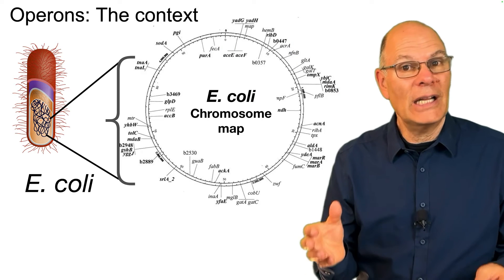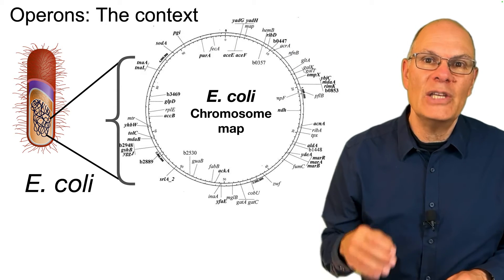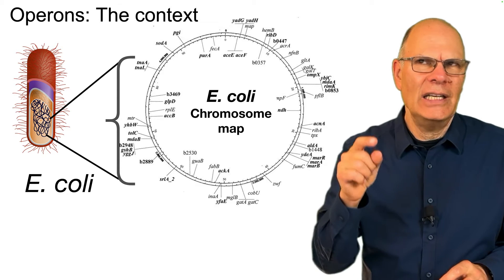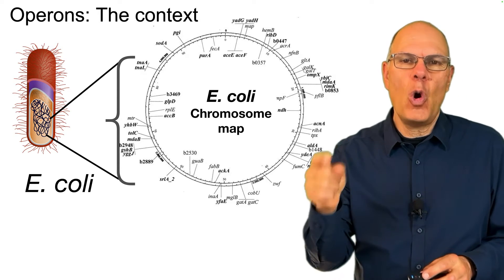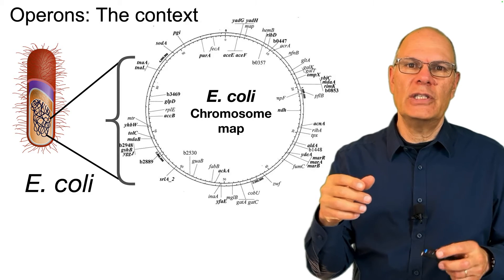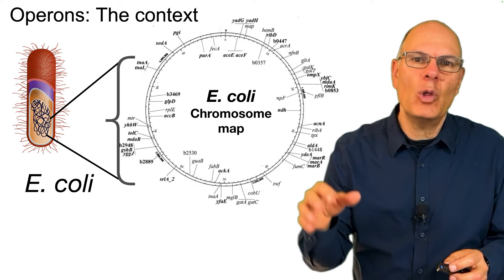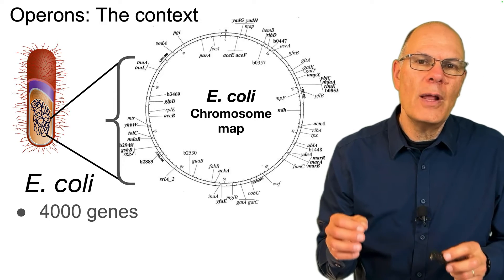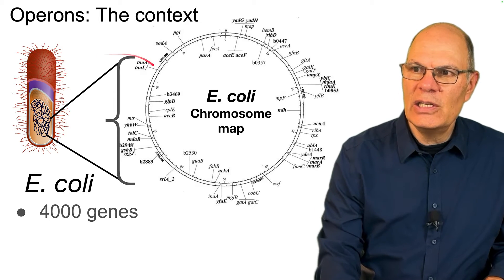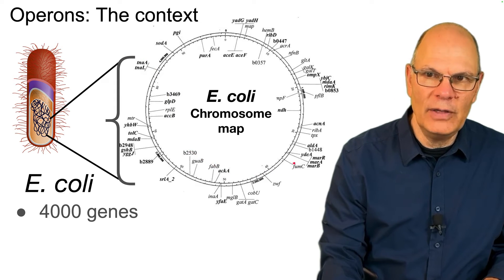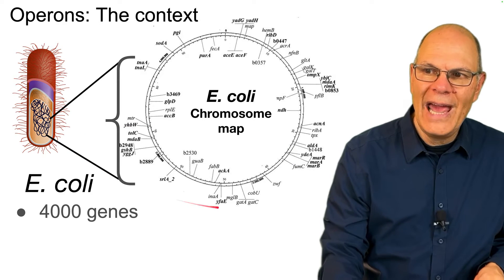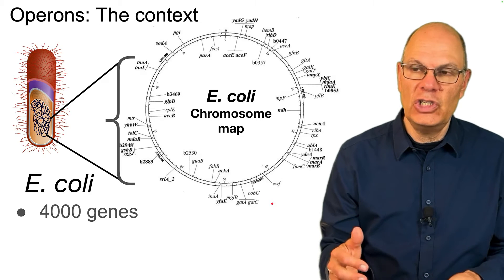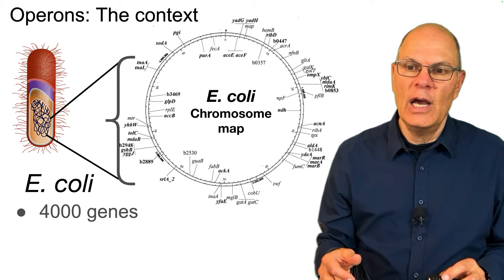Let's start with a little context. E. coli is a bacterial cell that lives in our colons — that 'coli' is related to 'colon' — and it also lives in the colons of many other animals. The colon is the large intestine. E. coli has about 4,000 genes. This is a chromosome map of E. coli's chromosome.